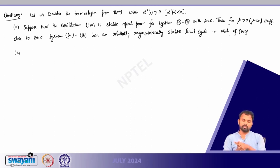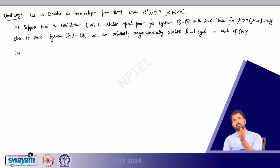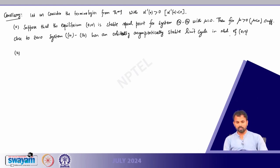Similarly, we can look into some examples. There will be examples in your assignment sheet where you can solve problems and see what the orbit is — whether it is stable, orbitally asymptotically stable, and so on. We will stop here for this chapter and move on to the next chapter in the next class. Thank you for your attention and I will see you in the next class.